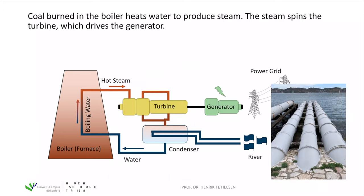Finally, what we need is a river to cool down our hot steam. After running through the turbine, we still have hot steam, but we need cool water so that this water can be pumped back to the boiler. We have a condenser and take cold water from the river to cool down the hot steam by exchanging the heat energy. Then we can pump our water back to the boiler.